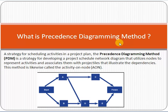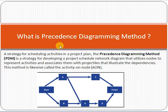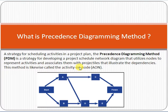Please subscribe to my channel and click the bell option so that my new videos can reach you. Now let's start. The Precedence Diagramming Method is a diagramming method — a method to make a figure, a diagram of activities. It is a strategy for scheduling activities in a project plan, for developing a project schedule network diagram that utilizes nodes to represent activities and associates them with arrows that illustrate the dependencies.